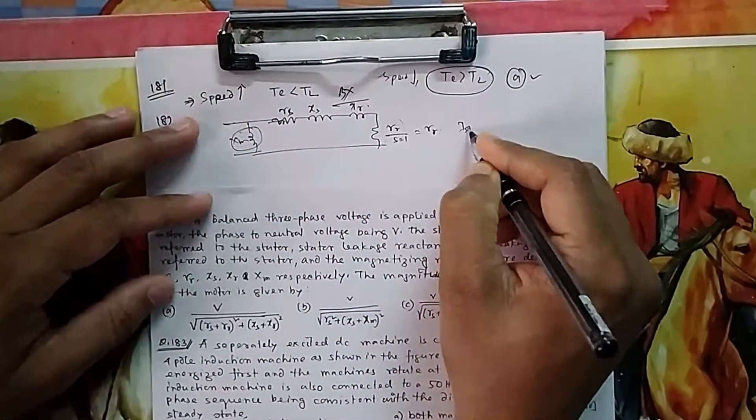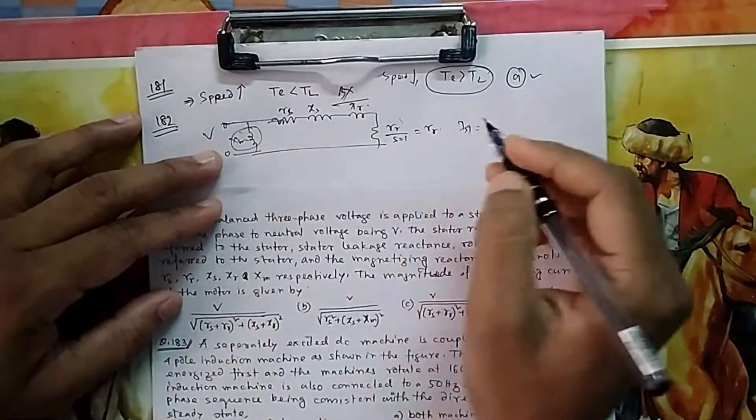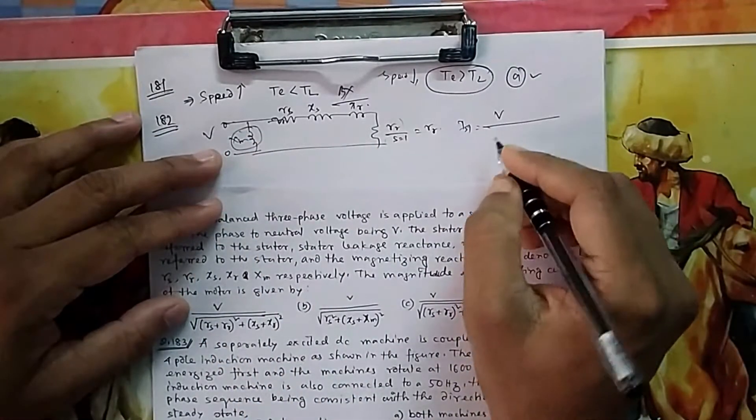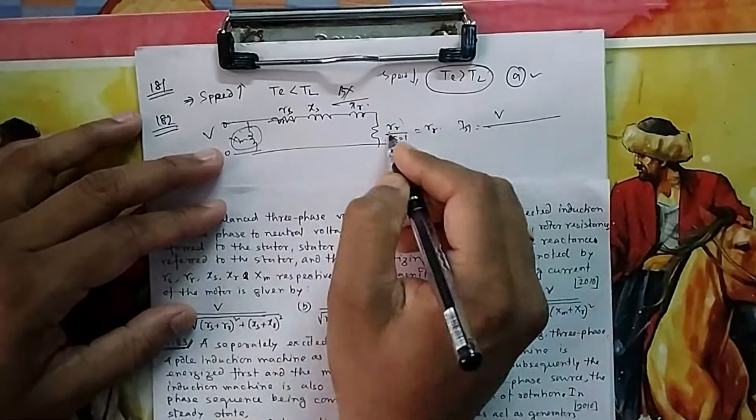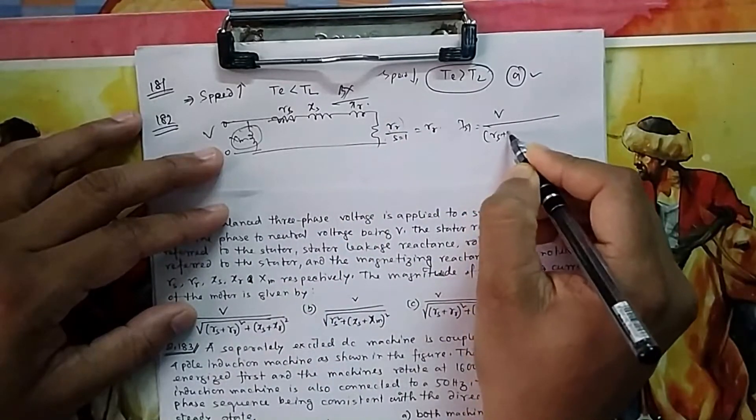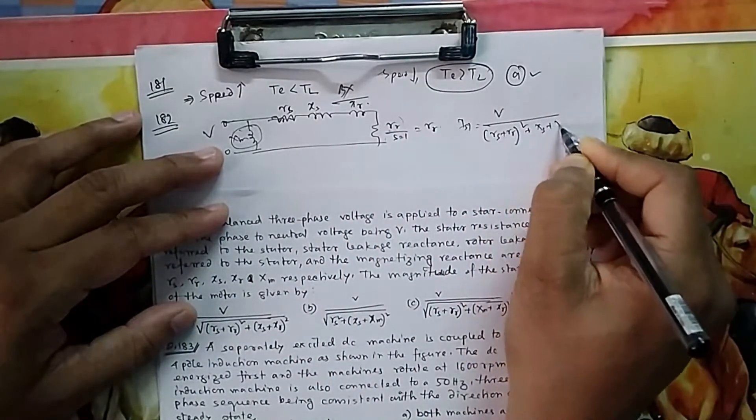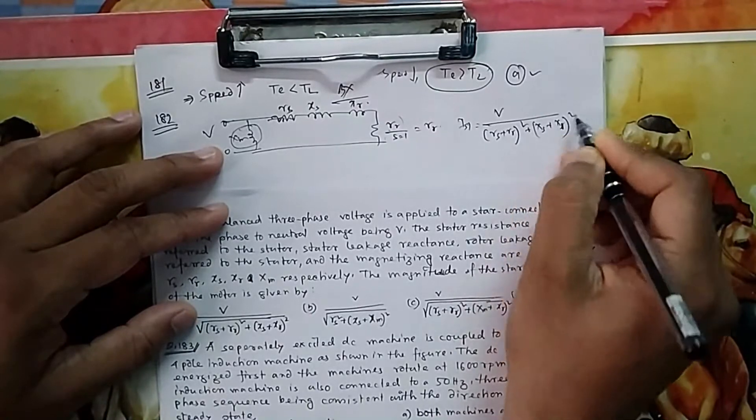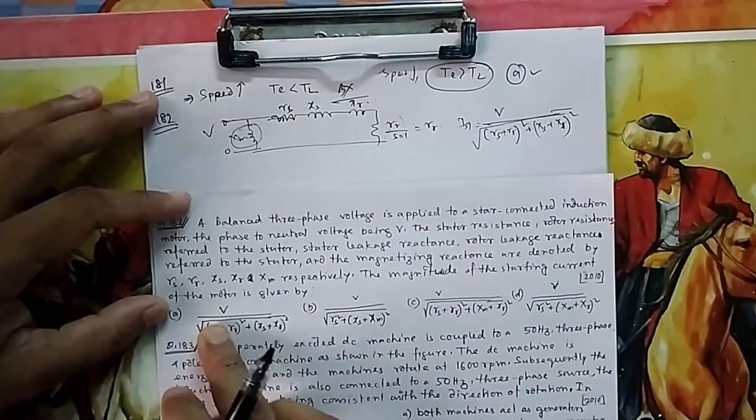So starting current generally we take, this is your supply voltage phase-to-neutral. It is V by this impedance. So RR plus RS whole square, then XS plus XR whole square under root, V by Z. That is option A.